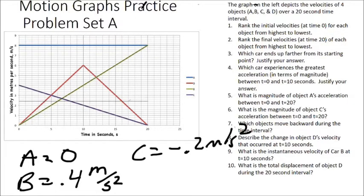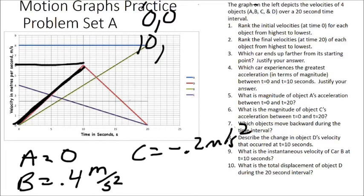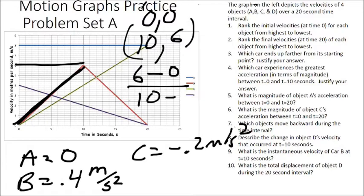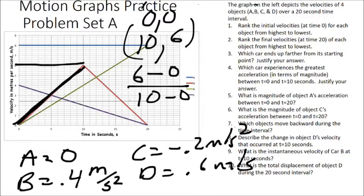Now for object D, the red line — it has a positive slope in the first 10 seconds. At 0, the y-coordinate is 0; at 10 seconds, y is 6. So change in y: 6 minus 0, over change in x: 10 minus 0. The average acceleration of object D is 0.6 meters per second squared. The answer for question four — which has the greatest acceleration in terms of magnitude — is D.